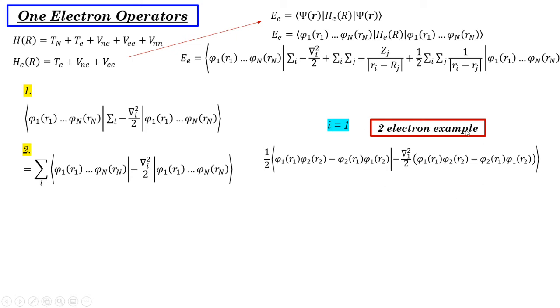So we want to basically compute this term here, where we have the kinetic energy operator on electron one. So how do we do that? So what we end up doing is we end up having to distribute everything and we're going to end up getting four terms. So I'm just going to do this for the first term, but you'll be able to see how it applies to all four terms.